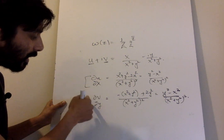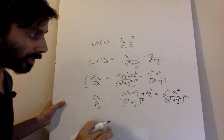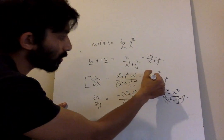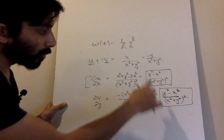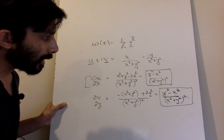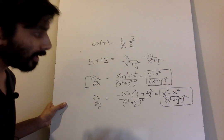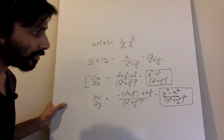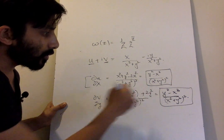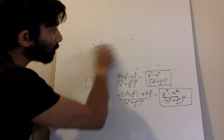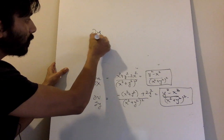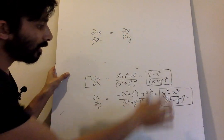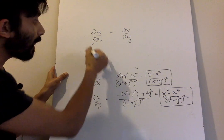You can repeat this process for ∂u/∂y and ∂v/∂x, and they will also yield similar algebraic expressions. The key point is that ∂u/∂x = (y²−x²)/(x²+y²)² equals ∂v/∂y = (y²−x²)/(x²+y²)². Both expressions appear equal to each other, and in general this is true for all values of x and y which are non-zero.